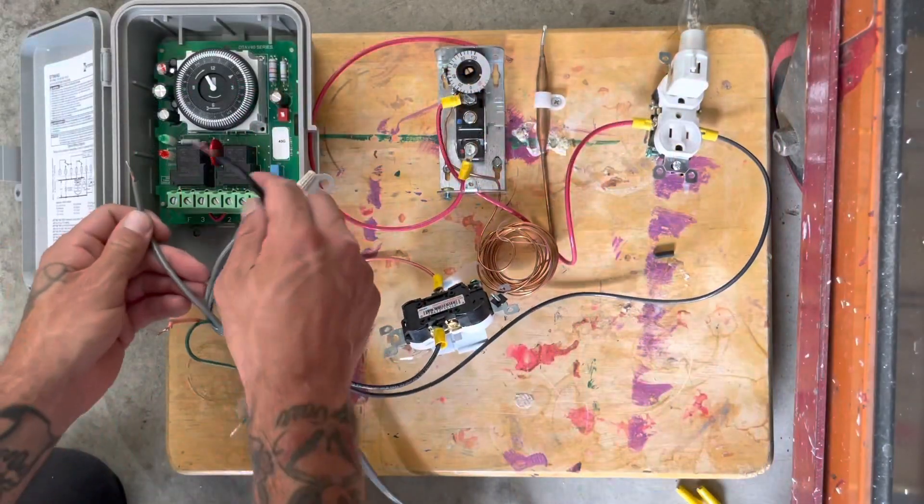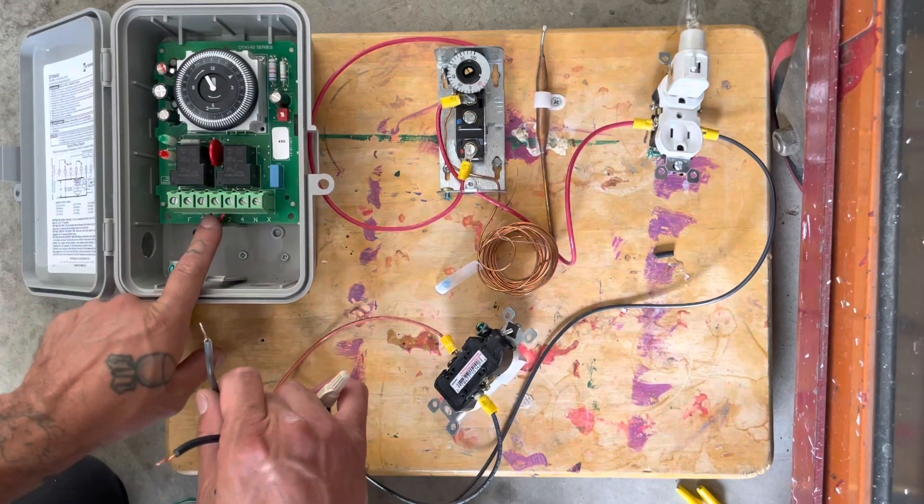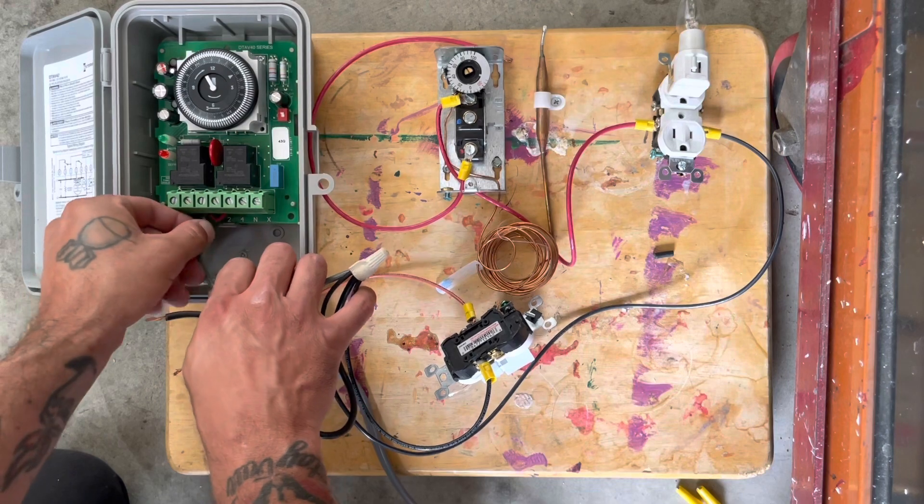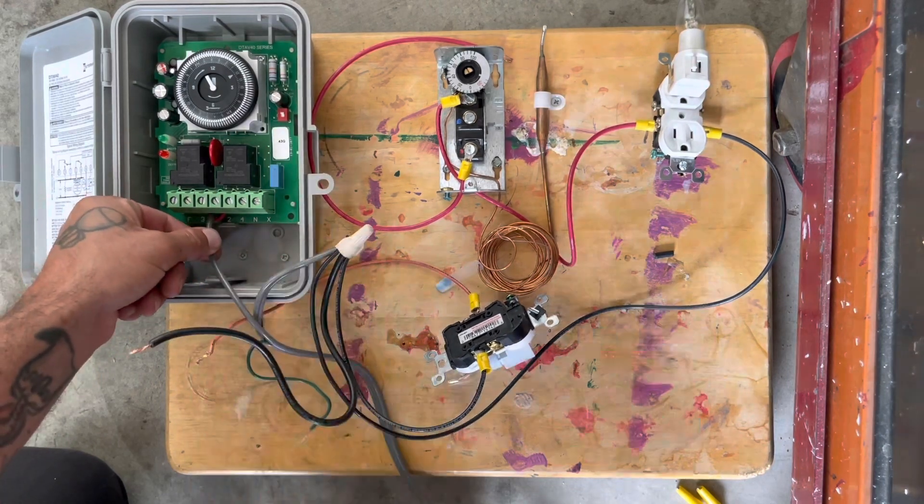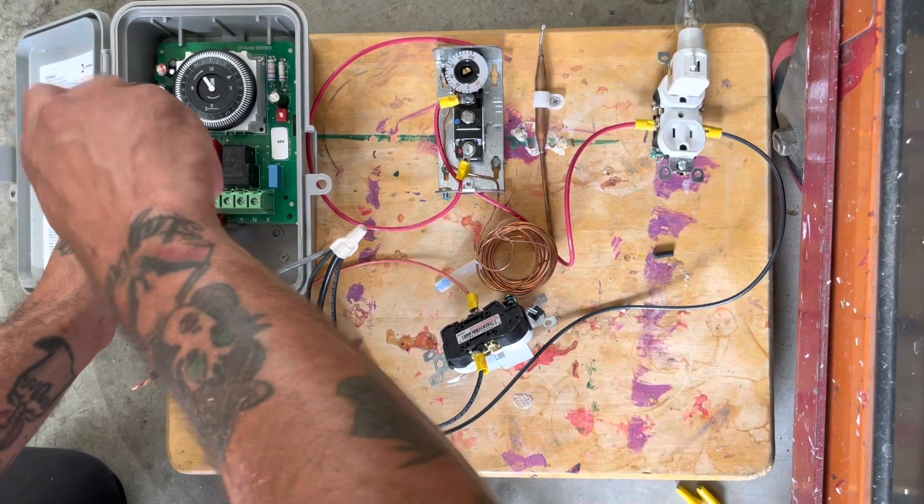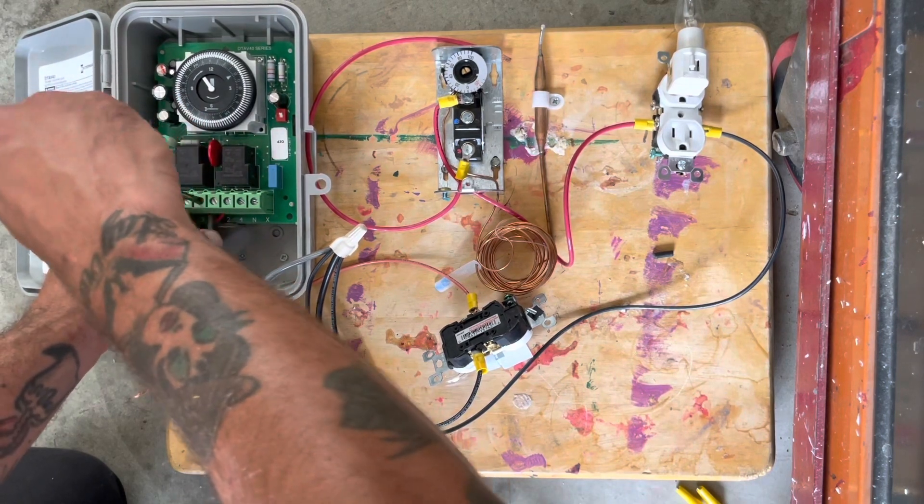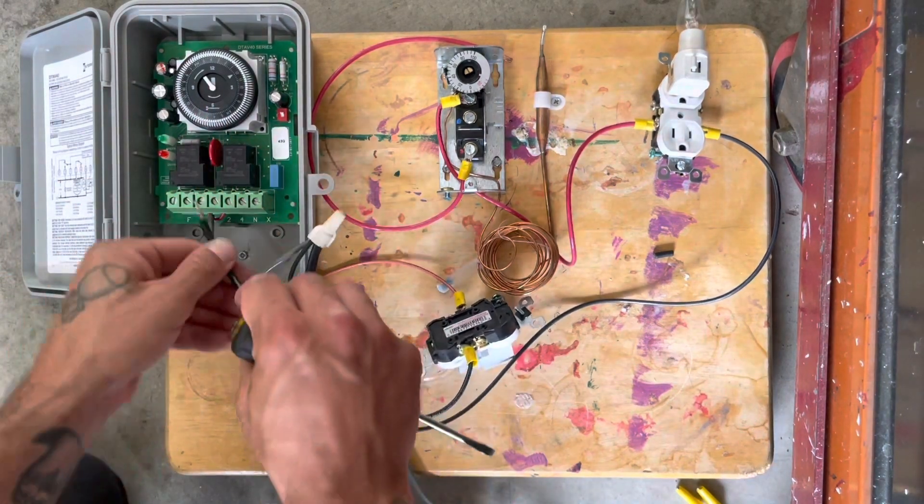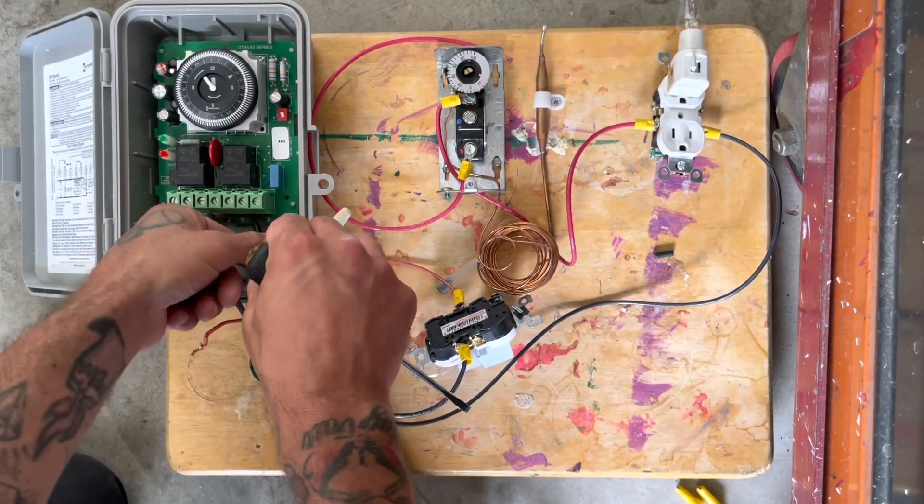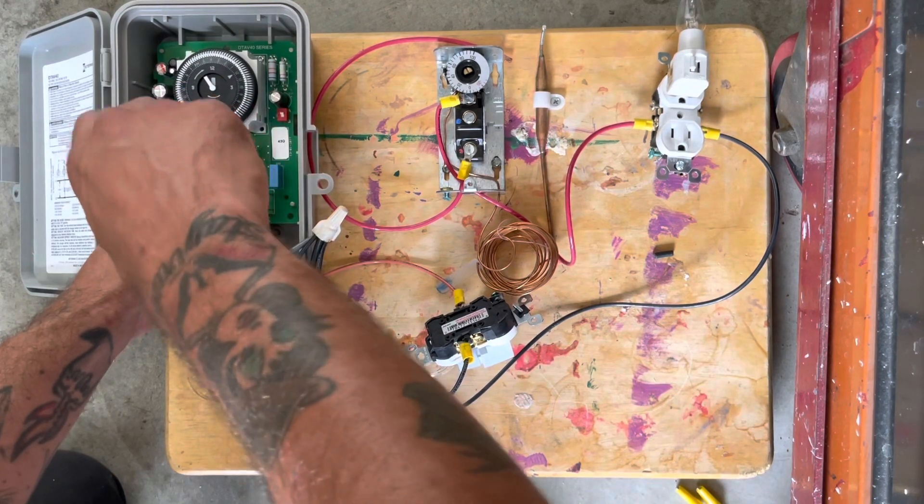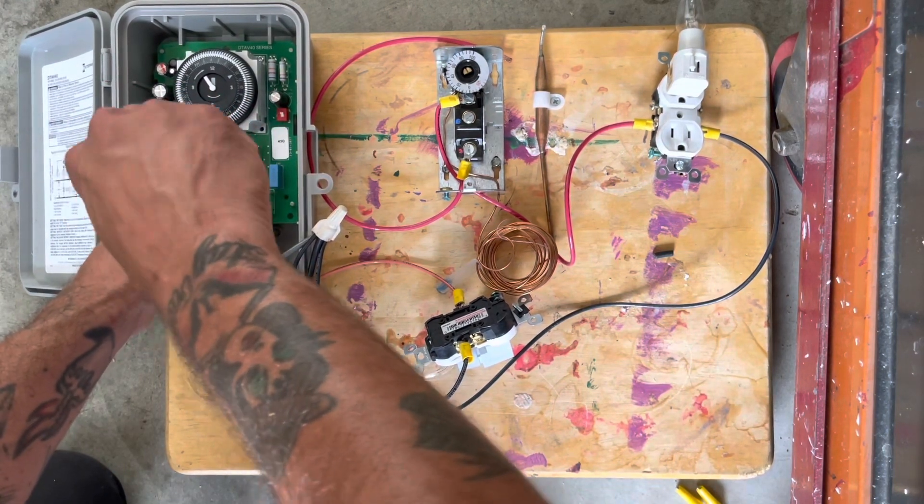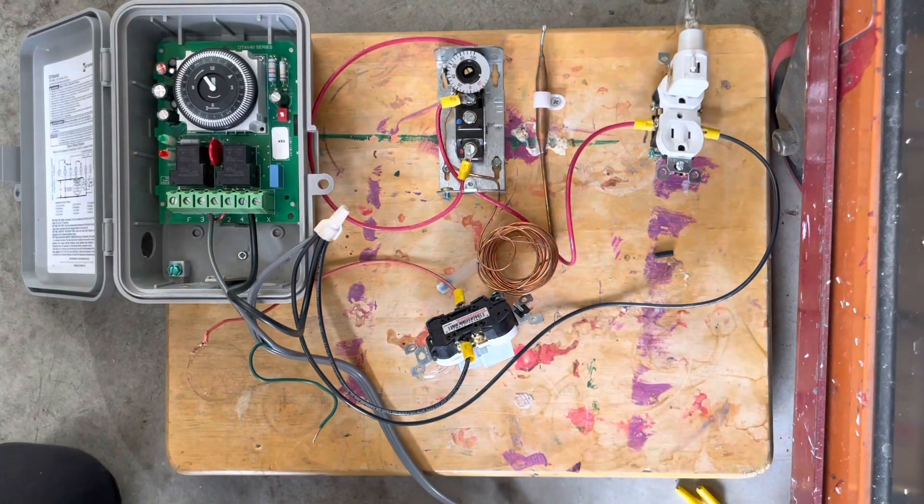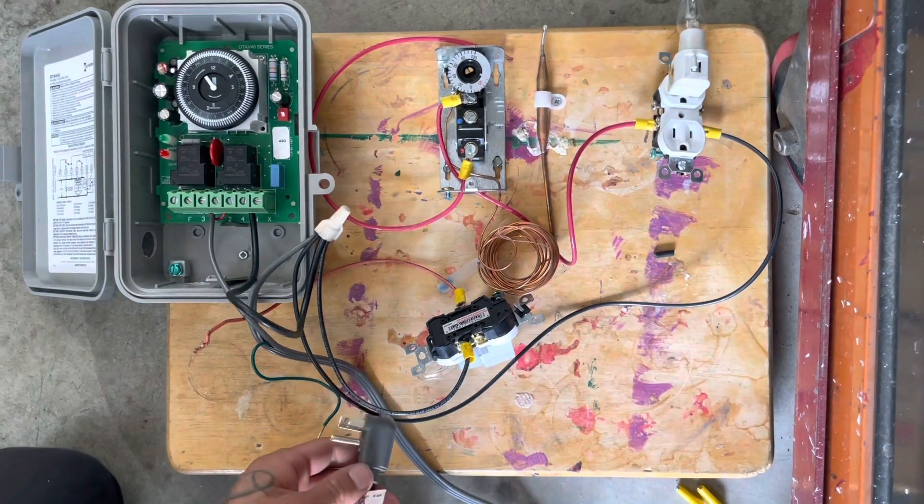And to energize the clock, we have our jumper wire from one to two. So one, and then here's in, just the common. Alright, so one and in should energize the defrost clock.